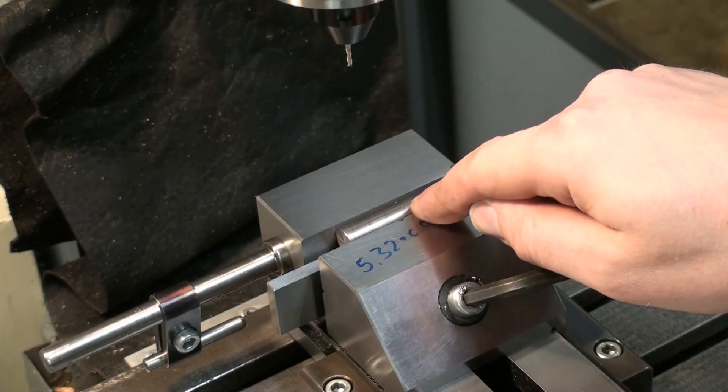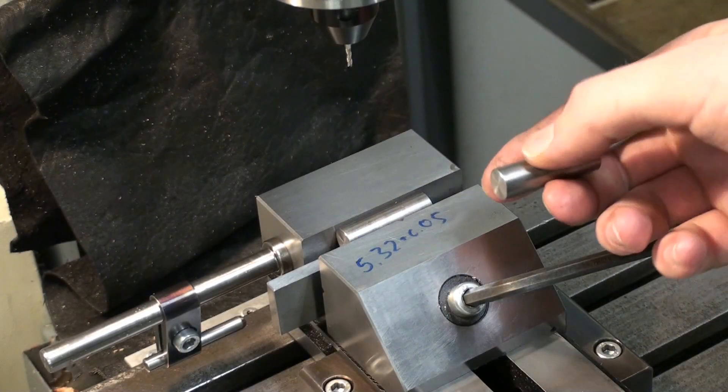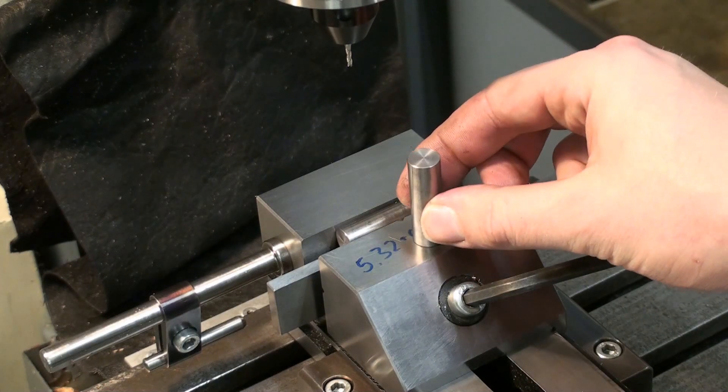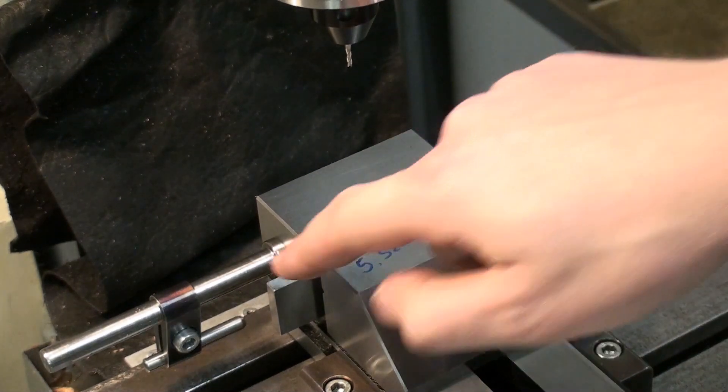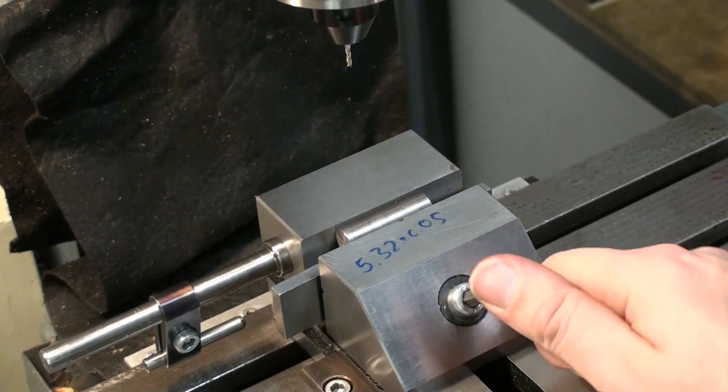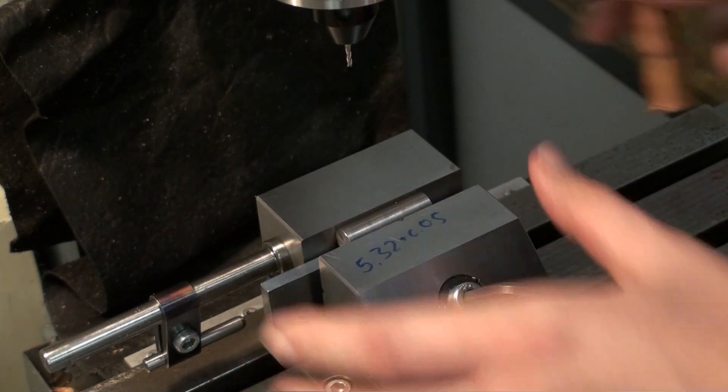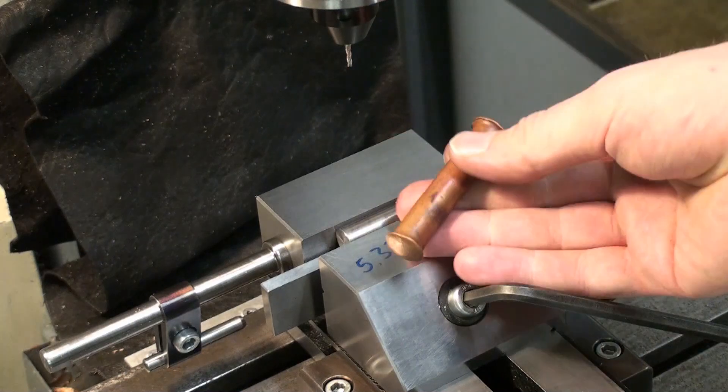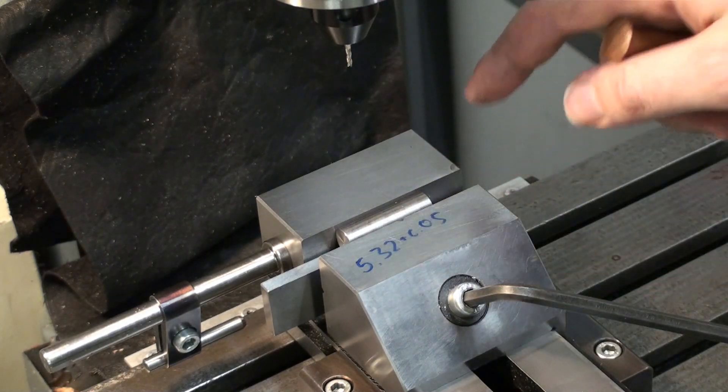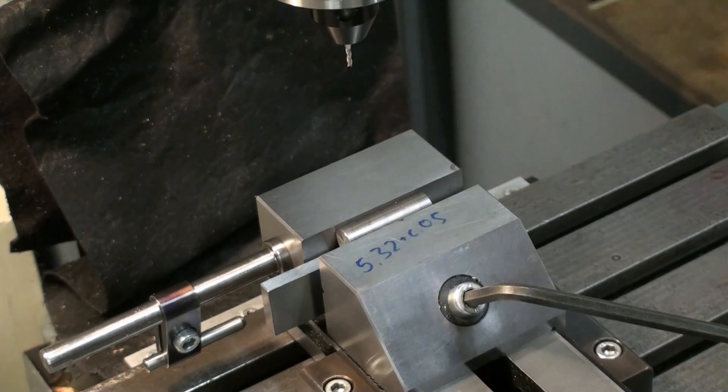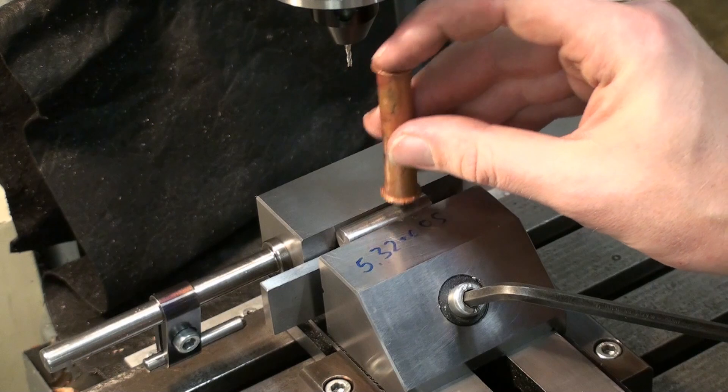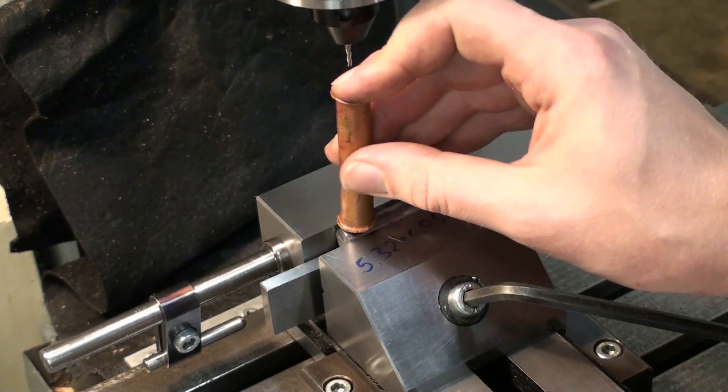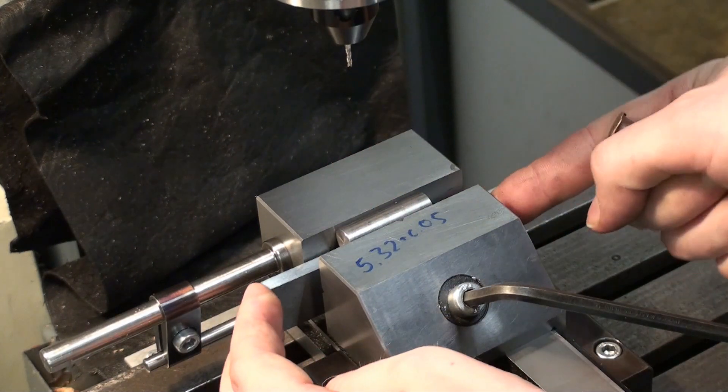I'm going to mill a flat on this stock material so it's indexed when I'm clamping into the device. I put the part on a parallel, I clamp it, and to seat it I prefer a small copper drift. I don't like to hit it with a dead blow hammer or a soft hammer. Just adjust, and then the parallel is snug under the parts.